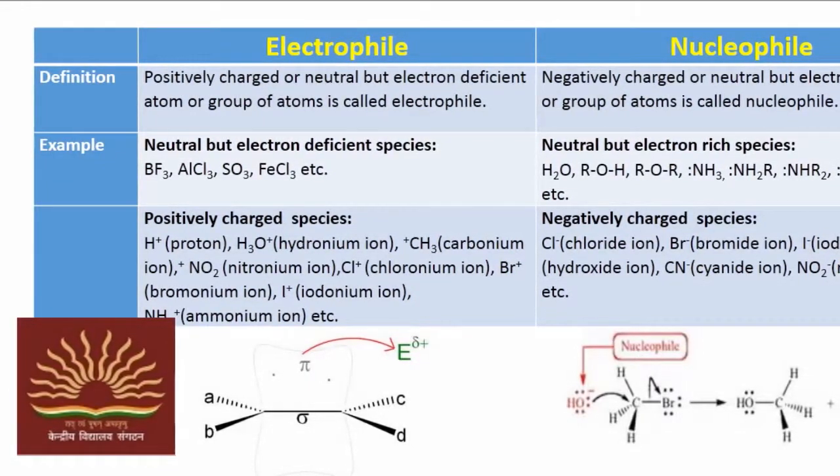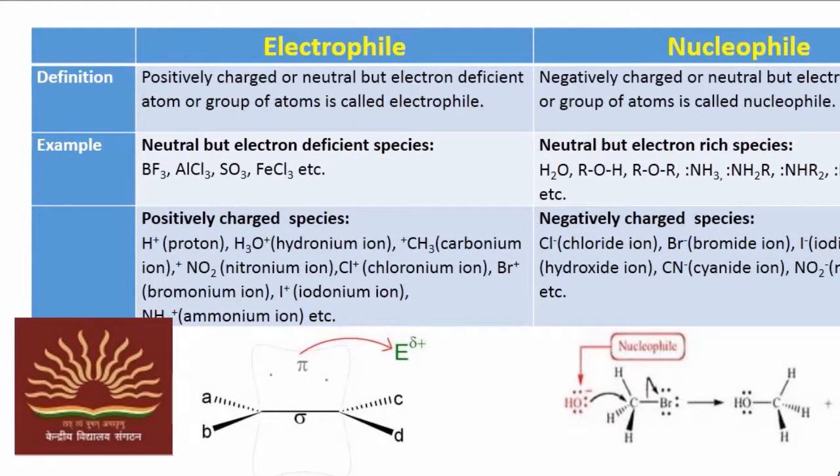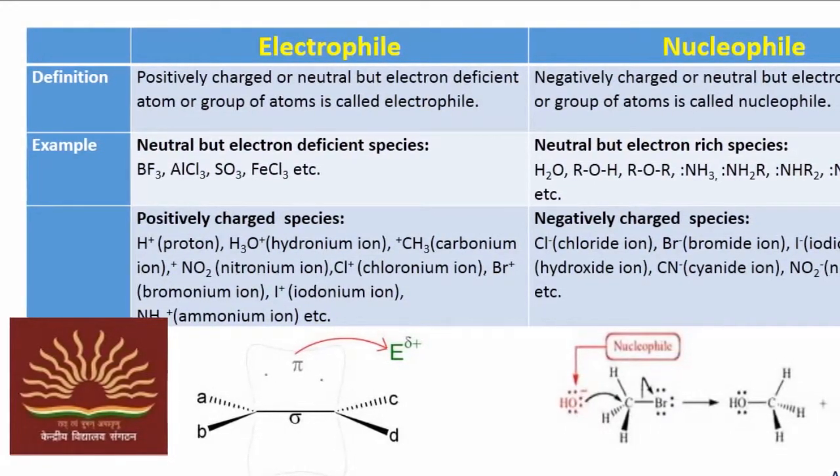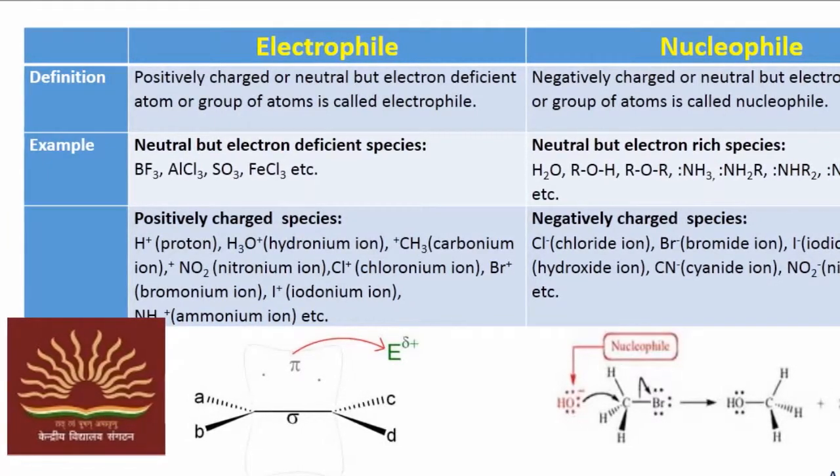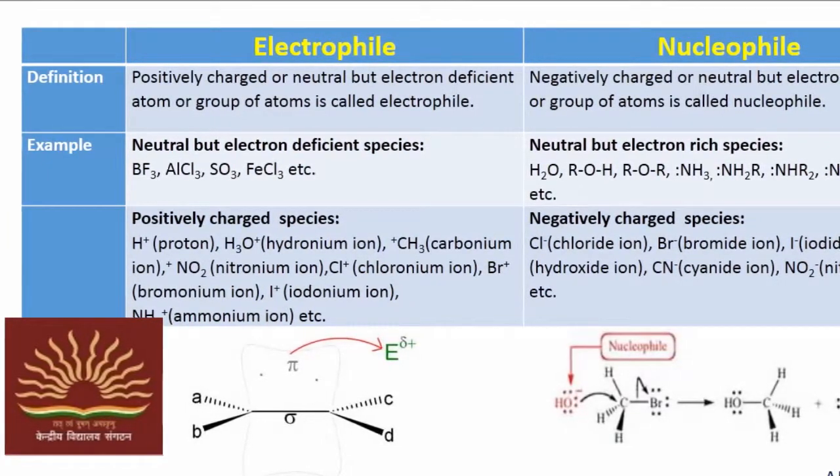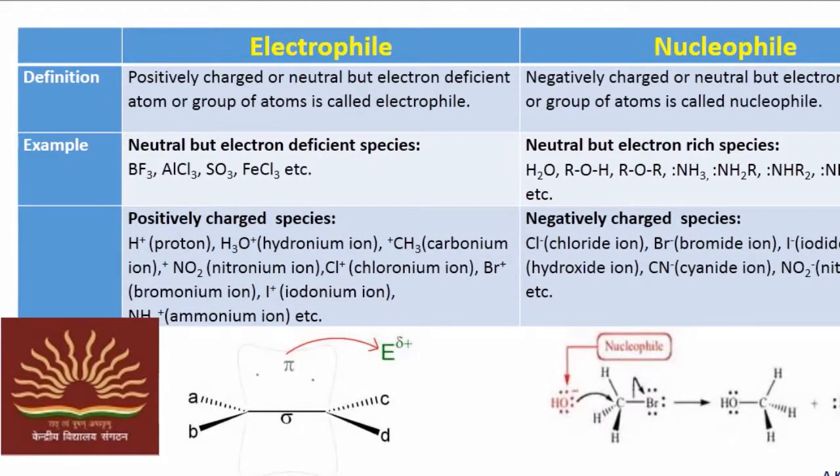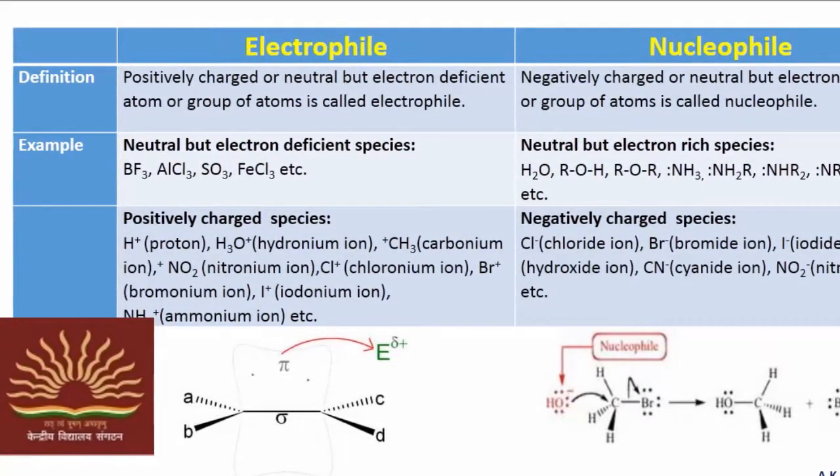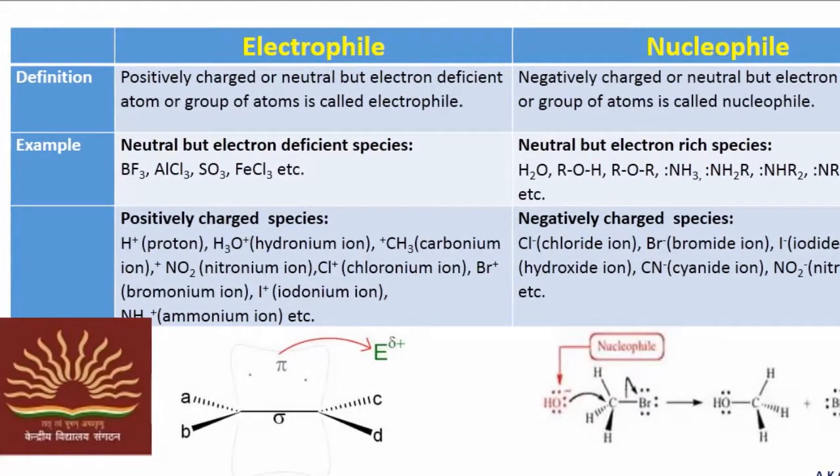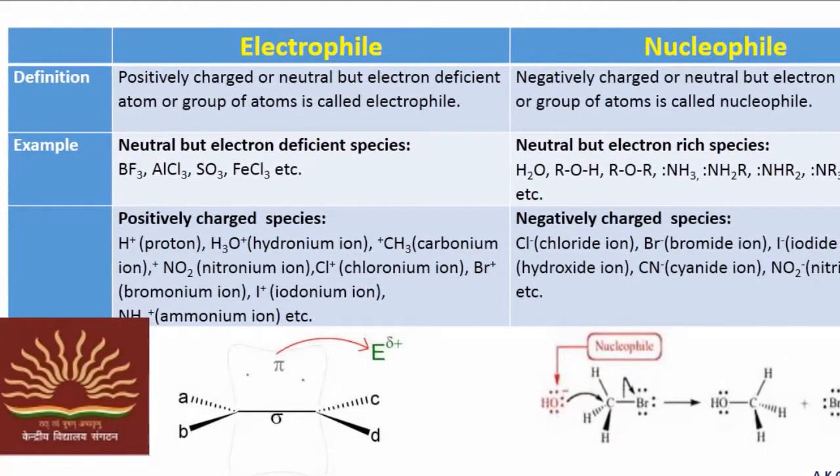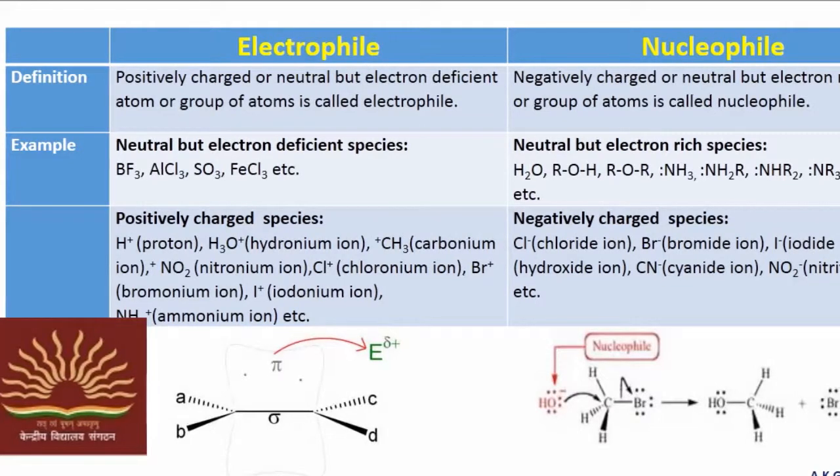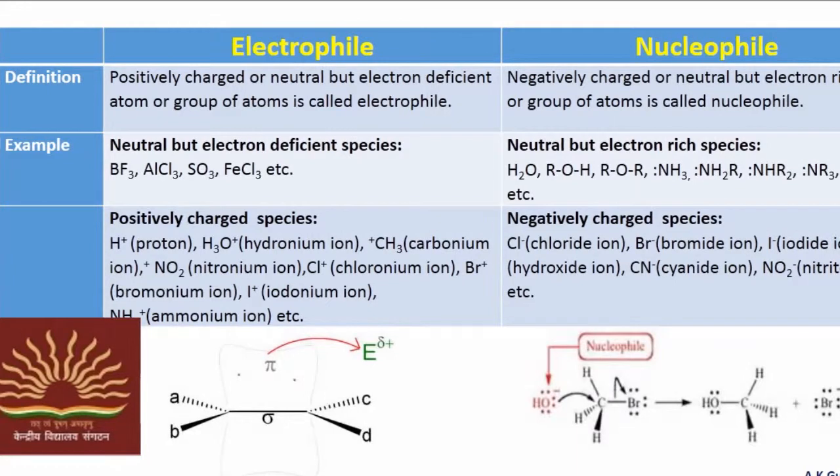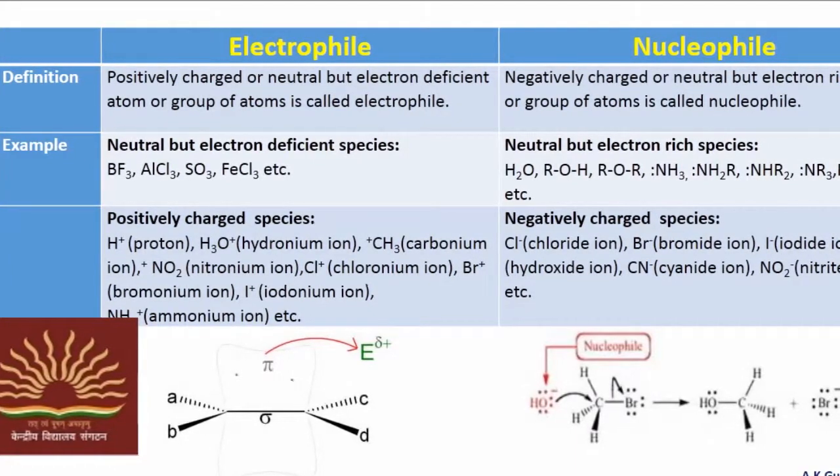Electrophiles are positively charged or neutral but electron deficient atoms or groups of atoms. Nucleophiles are negatively charged or neutral but electron rich atoms or groups of atoms. So nucleophiles are neutral but electron rich, and electrophiles are either positively charged or neutral but electron deficient. This is the basic difference. Now let us take examples.